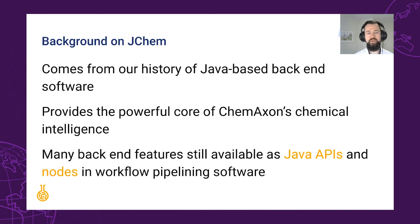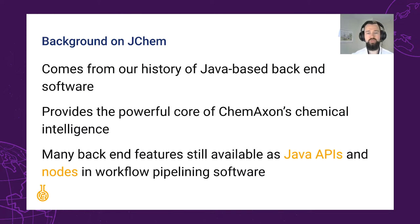Additionally, since many of our full software packages have their own REST APIs, you can interact with them easily through the REST API nodes in these applications. Examples include interacting with our registration API to automate compound registration, or running calculations on scalable infrastructure instead of locally by batching calls to the JChem microservices.